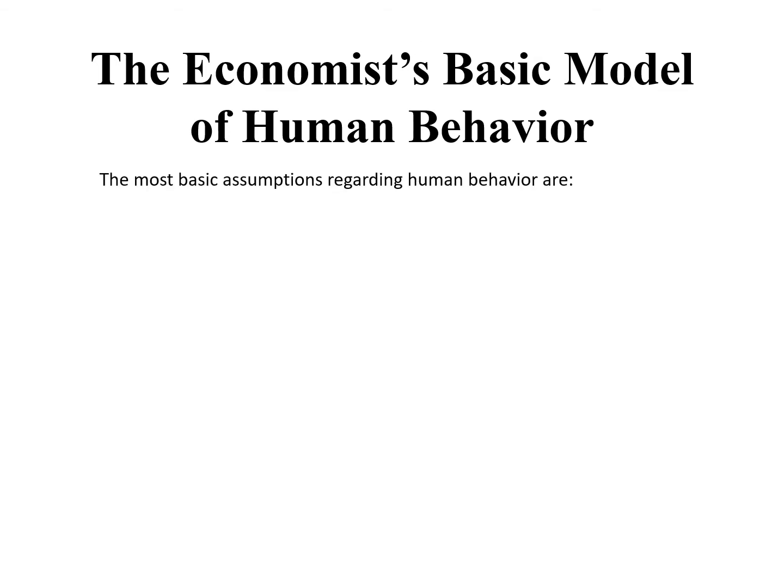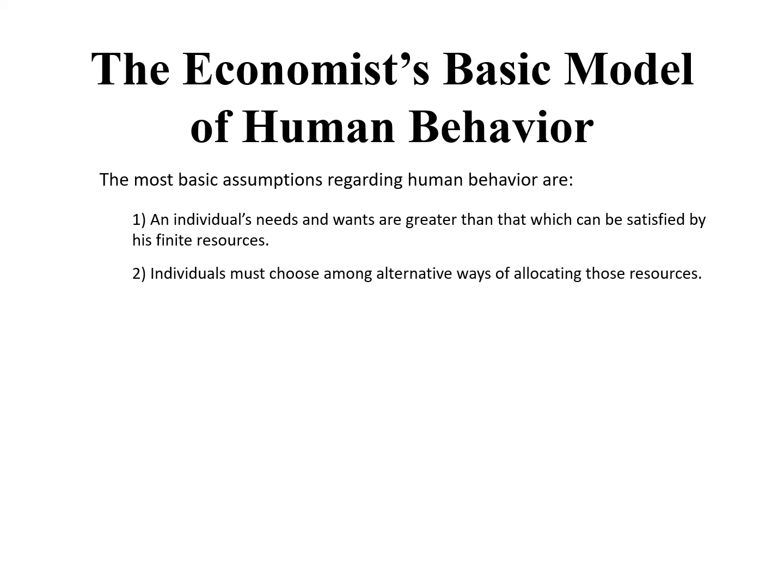Let's consider the most basic assumptions that economists make regarding human behavior, although you no doubt know somebody that doesn't conform to them all. First, an individual's needs and wants are greater than that which can be satisfied by his finite set of resources. He will never reach a point where he achieves such a high level of satisfaction that he can no longer improve his state of being — he just doesn't have the resources, the time, the energy, the money, etc. Because he doesn't have enough resources to satisfy all of his needs and wants, he must choose among alternatives: which needs and wants will he satisfy, and which will remain unsatisfied?